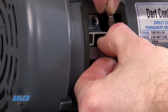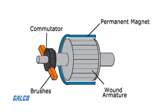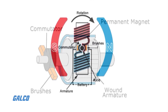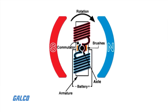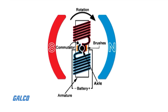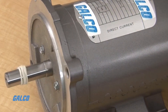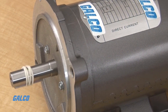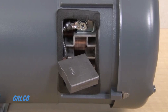DC motors rely on carbon brushes and a commutation ring to switch the direction of the current and magnetic field polarity in a rotating armature. This interaction between the internal rotor and fixed permanent magnets induces the rotation of the motor. DC motors are very efficient but have short life spans and suffer from very specific losses that are a product of their design.